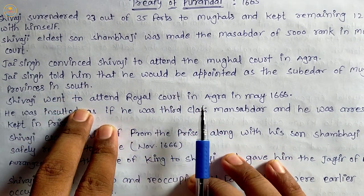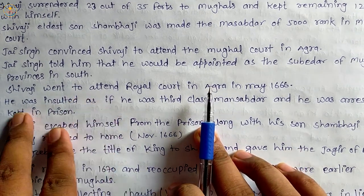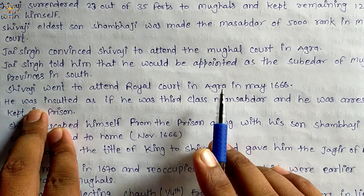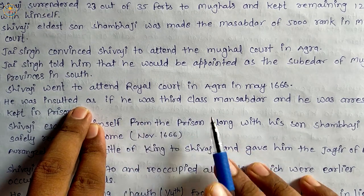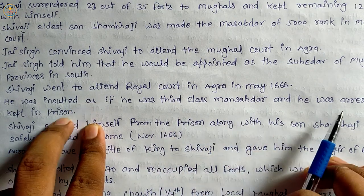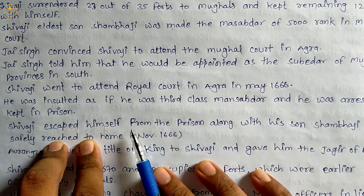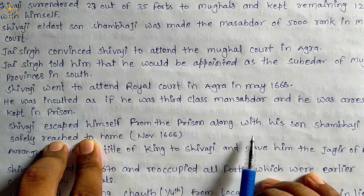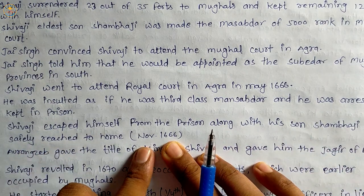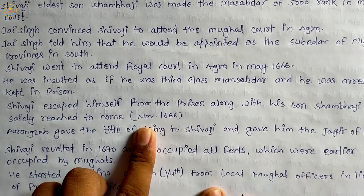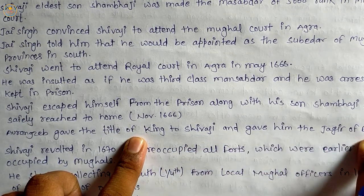Shivaji went to attend the royal court in Agra in May 1666. When he attended the Agra fort, he was insulted — treated as a third-class Mansabdar — and was arrested and kept in prison. Shivaji escaped from prison along with his son Sambaji and safely reached home in November 1666. Aurangzeb later gave Shivaji the title of king and the Jagir of Berar.